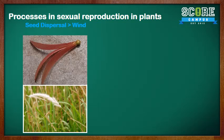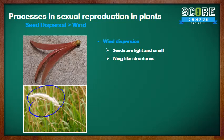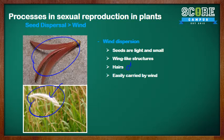For wind dispersal, the seeds are usually light and small, like the lalang seeds you can see here, so they are easily carried by the wind. Some seeds have wing-like structures, like the Shorea fruit. Some have hairs, like the dandelion. These properties help the seeds to be easily carried by the wind.